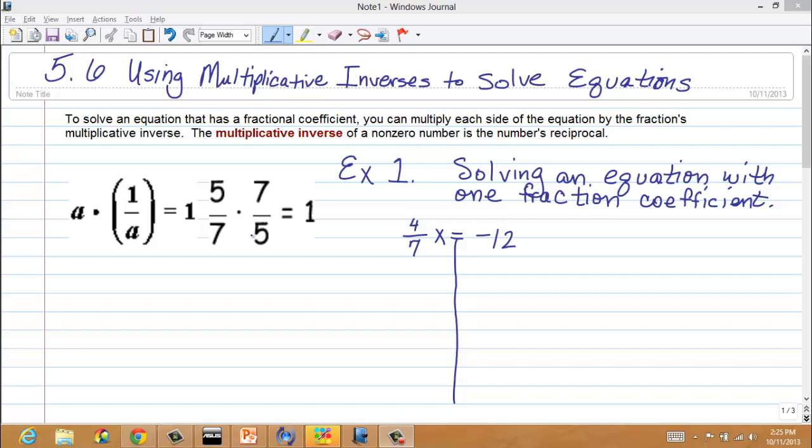In order to get x by itself, we've got to get rid of that coefficient. Because it happens to be a fraction, what we'll do, and you might think to yourself, well, shouldn't I just divide both sides by 4 sevenths? In math, whenever we want to divide by fractions, we're really multiplying by the reciprocal. Okay? That's the way to handle it. So, we're not going to divide both sides by 4 sevenths instead. So, let me get the next line here.